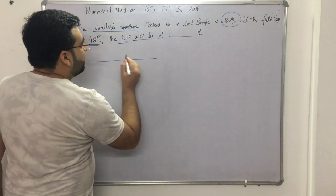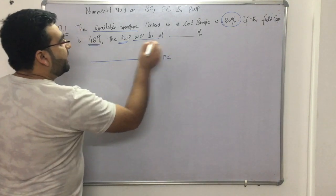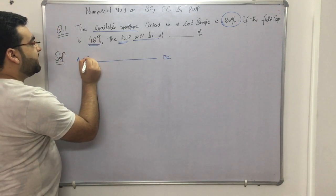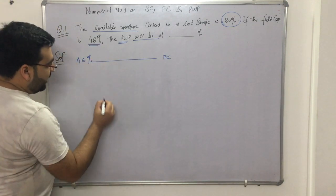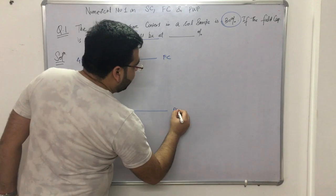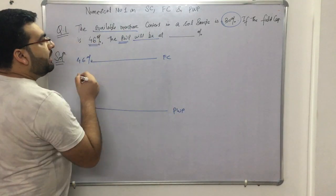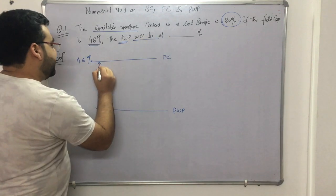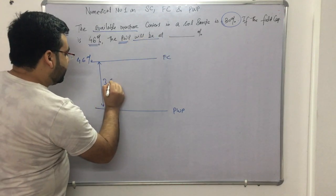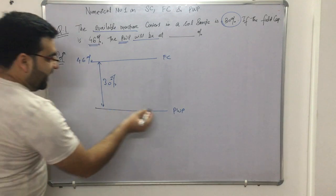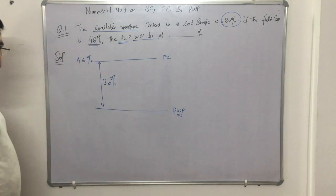The solution would be like this. The field capacity is given to you at 46%. The permanent wilting point is somewhere here. The available moisture content is 30%, so this is 30%. We need to determine the permanent wilting point.